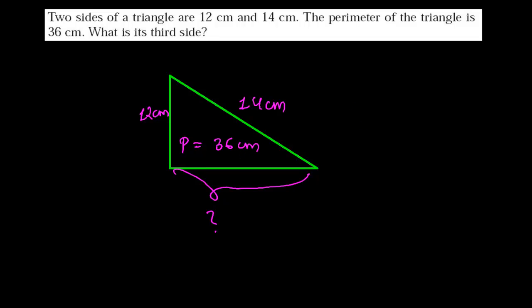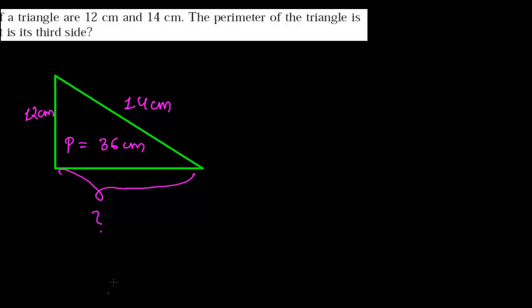And what we know is that perimeter is just the sum of the boundaries. Sum of all sides—sum of this side, this side, and this side. Let me give them names. Suppose this is A,